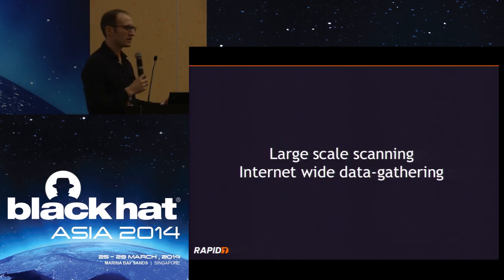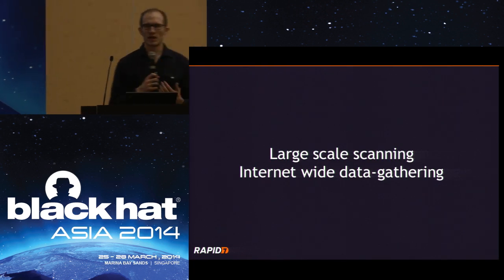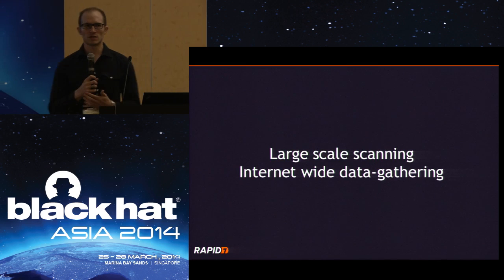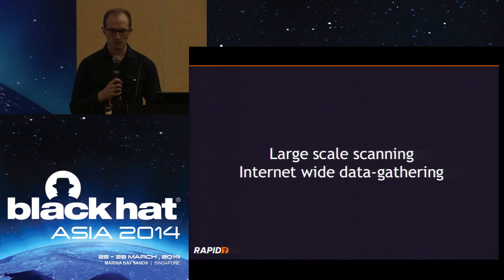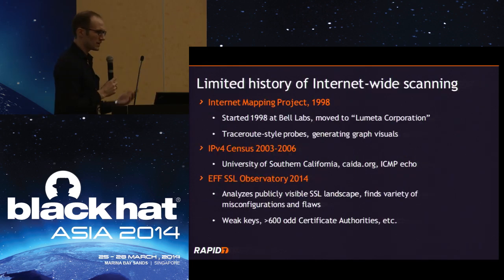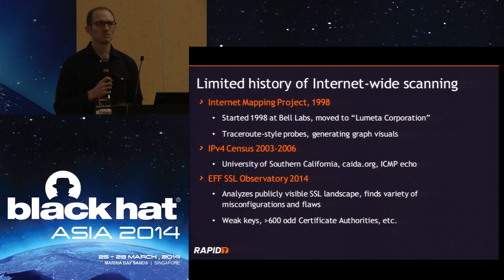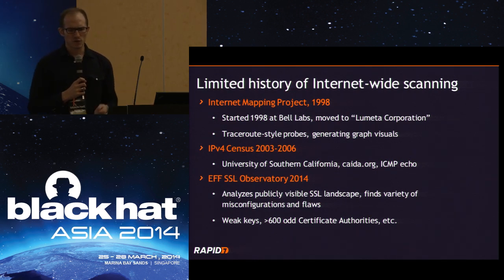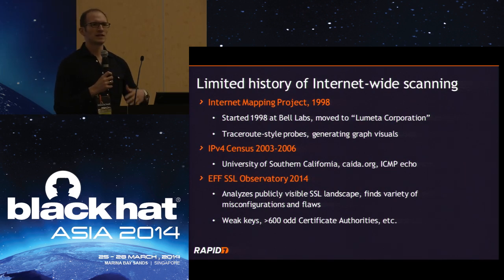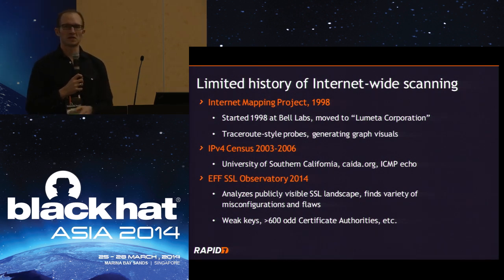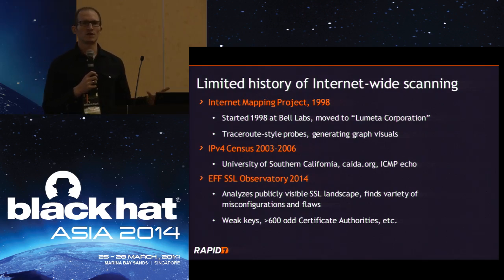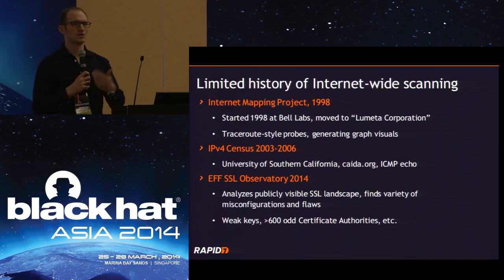We're talking about large-scale internet-wide research — hitting every public IP address and getting some data out of it. People have done this very early. One of the first projects, in 1998 at Bell Labs, started an internet mapping project. They essentially did ping ICMP echo requests to all IPs on the internet continuously, maybe every month or so, just to see how IPv4 address usage grows over time.